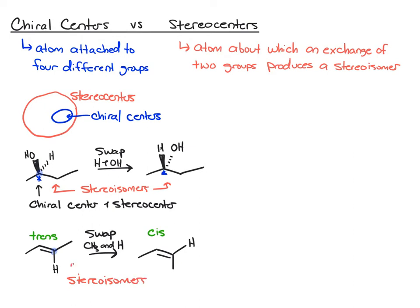In fact, these are diastereomers. So the interchange of two groups here produces a stereoisomer. So this must be a stereocenter. This is one of those cases that falls outside the chiral center category — that double bond carbon certainly isn't a chiral center, but it is a stereocenter.